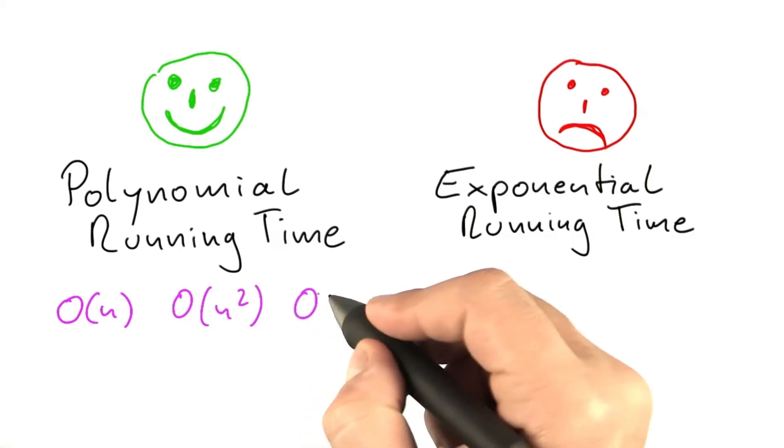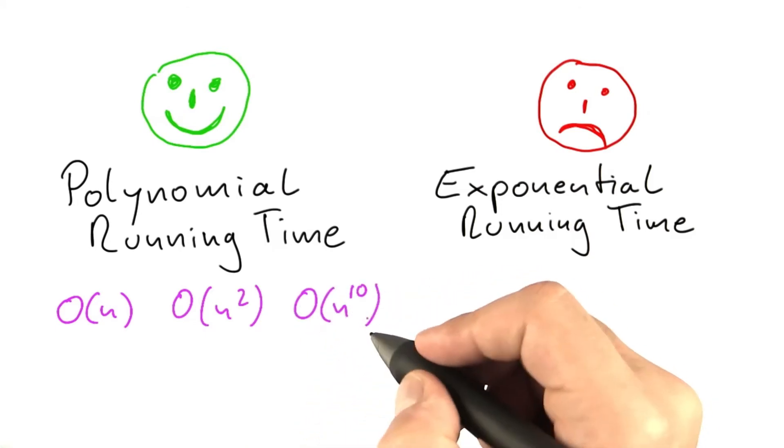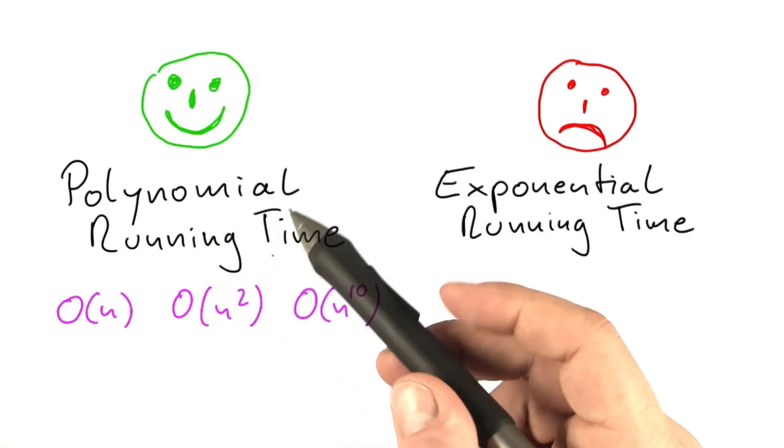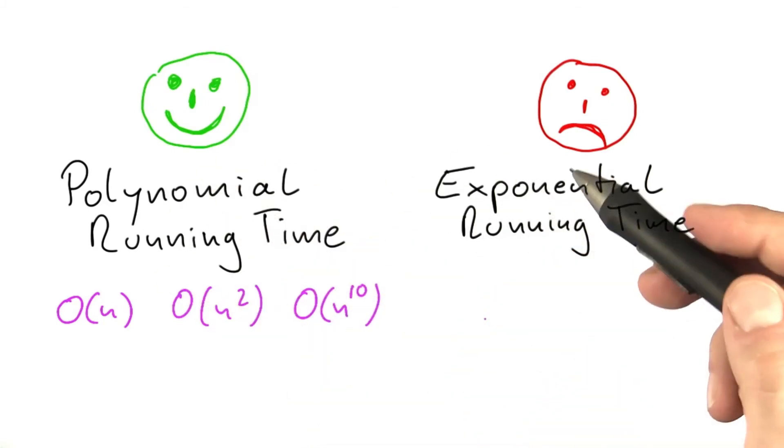But even an algorithm with a running time such as O of n to the power of 10, or worse, would be considered a polynomial time algorithm. And we would say that the running time of this algorithm is more or less acceptable.